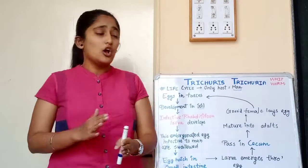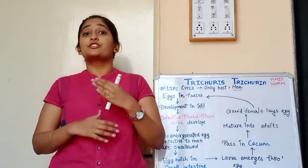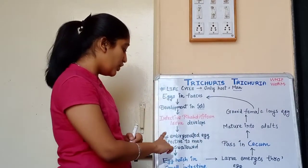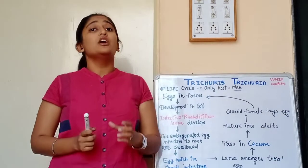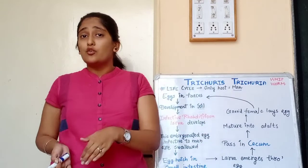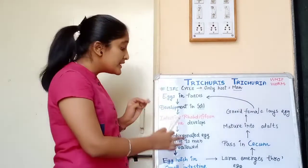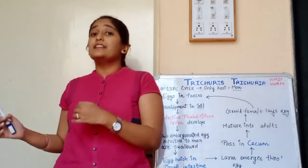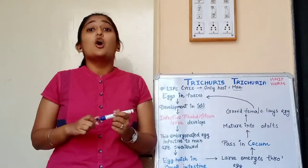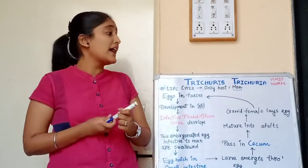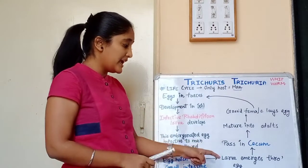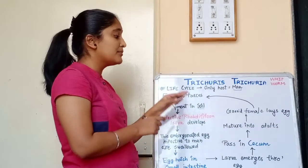The infective rhabdiform larva causes infection to humans. The egg containing the infective rhabdiform larva is swallowed through contaminated food and water. It then reaches the small intestine where it gets hatched and the larva emerges from the egg.